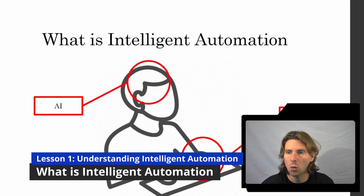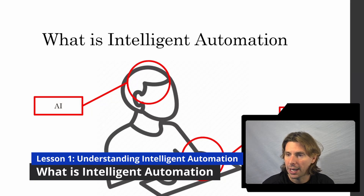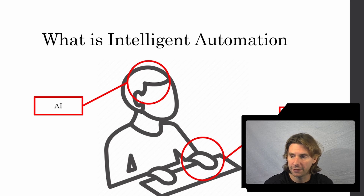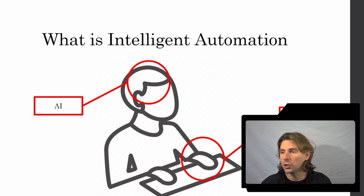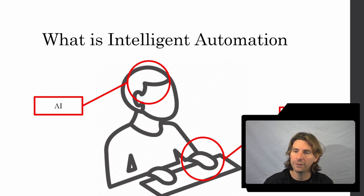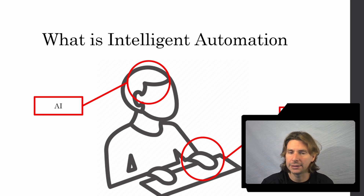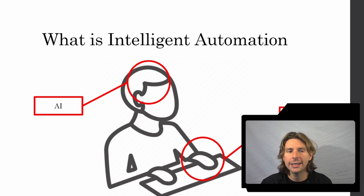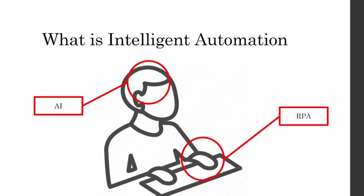We have understood what RPA is and how we can use it to automate different processes and tasks, and how we can use it to save lots of time and make our life a lot easier. But how does it all fit into intelligent automation, and why is this relevant for you that is learning Power Automate right now?